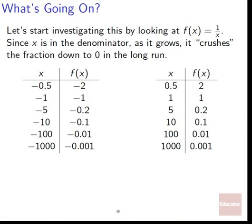Let's start by investigating f of x equals 1 over x. Since x is in the denominator, as it grows really, really large, this giant denominator crushes the numerator. The numerator just stays at 1, but the denominator gets big — it has x, so it's able to march out forever. As it gets really, really big, it crushes the numerator down to 0 in the long run.